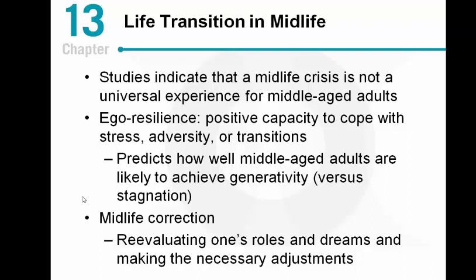A midlife crisis is not a universal experience. Some people instead have a midlife correction — during this middle period of life, you have enough wisdom to see where changes should be made, and still enough energy and time to make them. It's a good time to reevaluate priorities. Ego resilience — your ability to cope with stress during middle adulthood — makes it much more likely that you can take care of others and pass on a legacy. You have to take care of yourself before you can take care of other people.